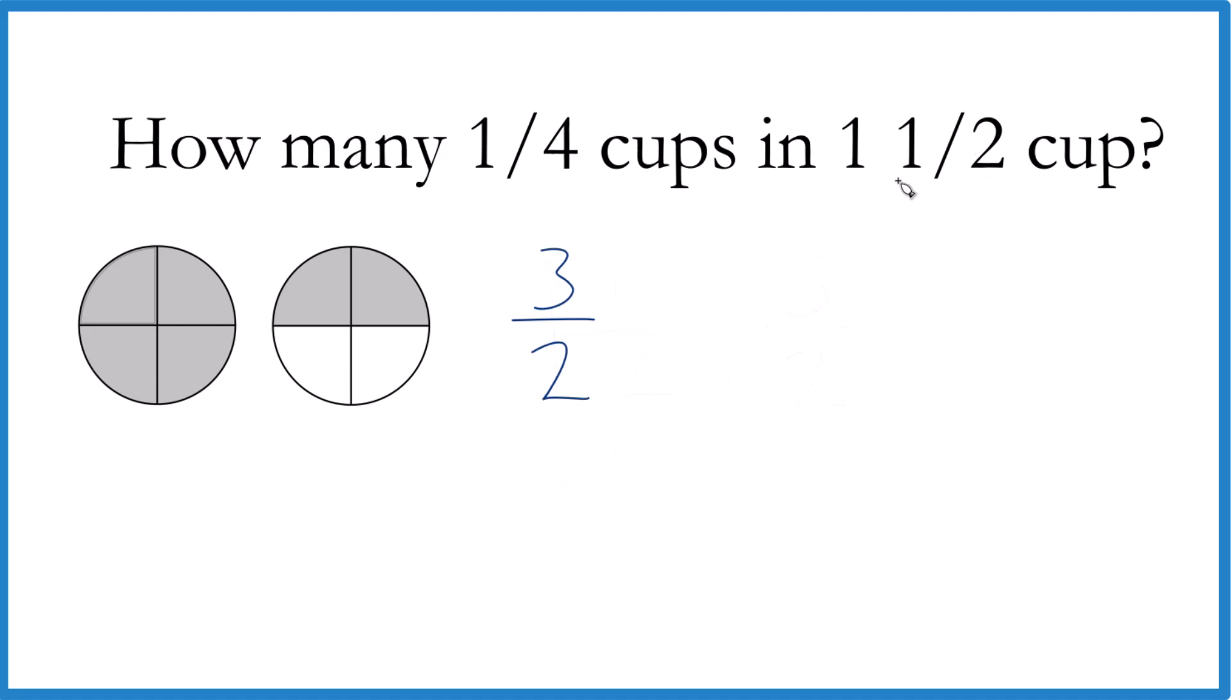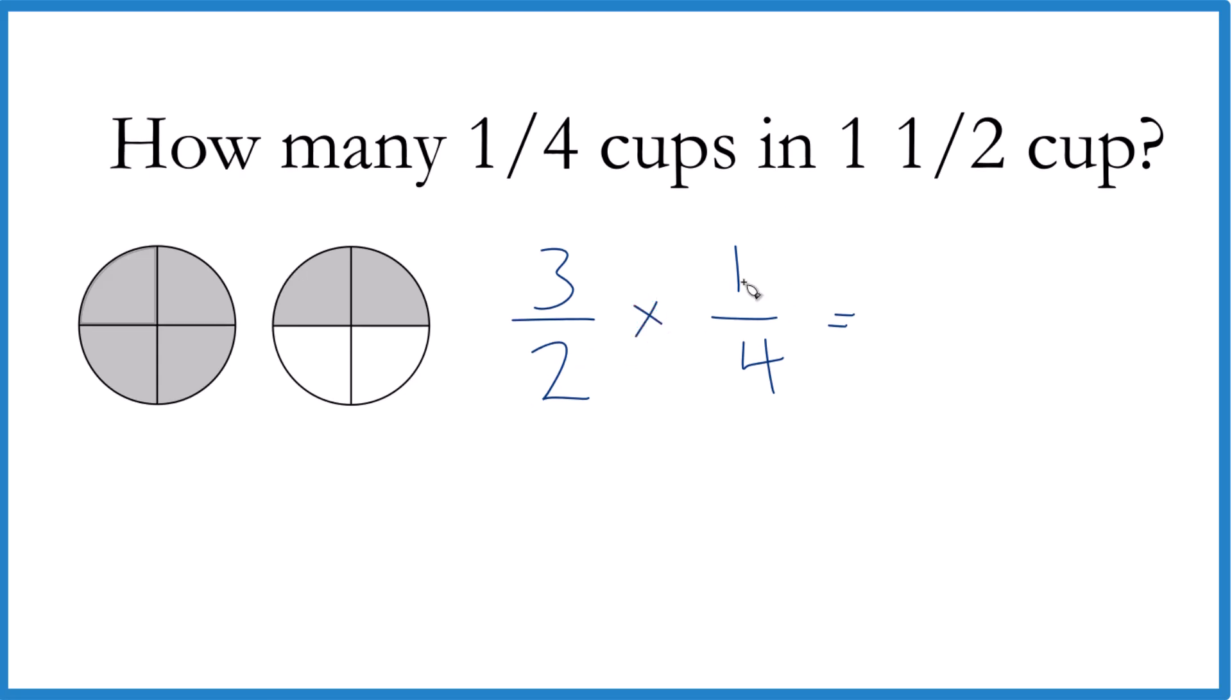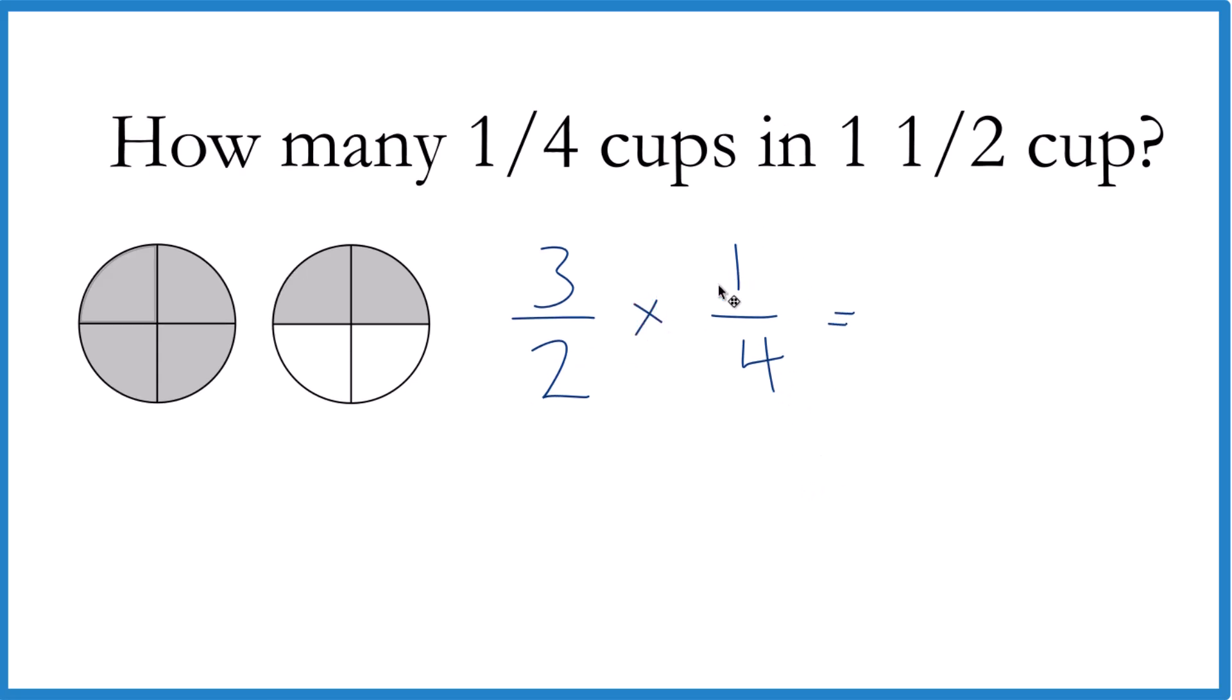And I'm going to take our one and a half cup and divide it by a quarter cup, by one-fourth cup. The way we do this, instead of division, though, we can get rid of this. We can do multiplication if we take the reciprocal of one-fourth. So we're going to move the one down to the bottom, and then the four goes up to the top. And that's the reciprocal of one-fourth.